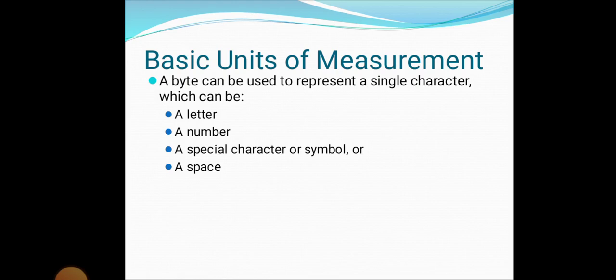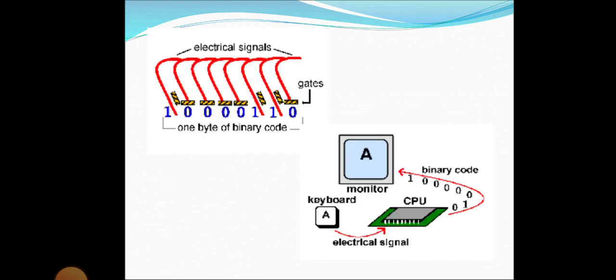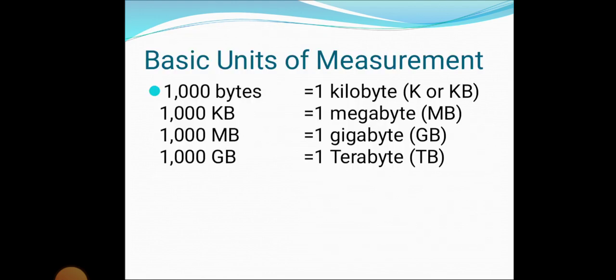Basic units of measurement: one thousand bytes equal one kilobyte, one thousand kilobytes equal one megabyte, one thousand megabytes equal one gigabyte, and one thousand gigabytes equal one terabyte.